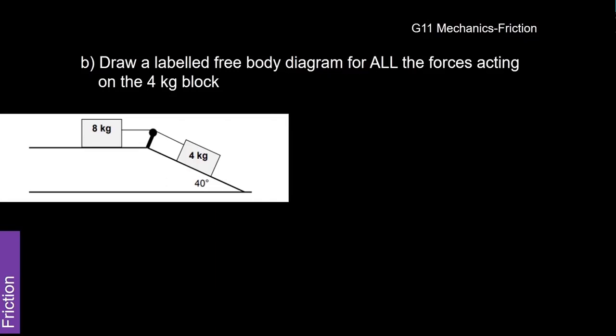Draw a labeled free body diagram of all the forces acting on the four kilogram block. So we'll do this. This is all we have time for. So here's our four kilogram block. There it is there. Okay. It's on a slope. What are the forces acting on it? So we're going to draw the block as a dot. Here it is here. That's my kilogram block. We know that we've got a force of gravity working on it. So there is force of gravity.